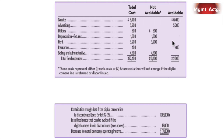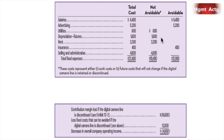Utilities — this is an allocated cost to this segment. You get rid of the segment, the utility bill is still on because it's one building. Depreciation on the fixtures — we're not going to do anything about that depreciation. Get rid of the segment, the fixtures are still sitting there. Rent — that's an allocated cost for the building, some of it allocated to this product line. That doesn't go away. So these are not avoidable — we get rid of the line, we still have to pay these. They're irrelevant for our decision.